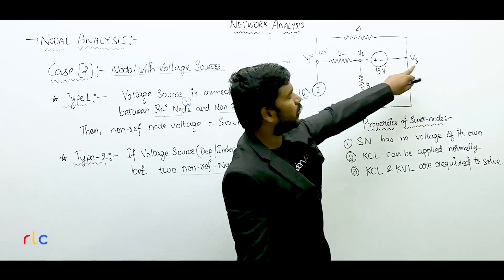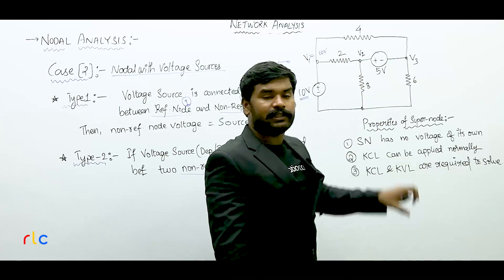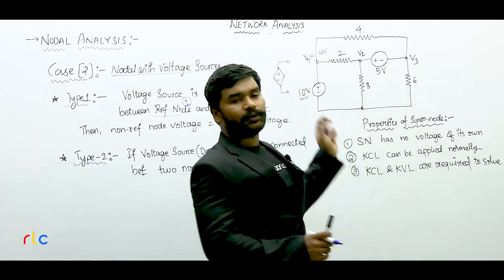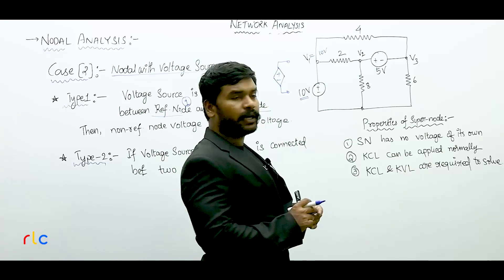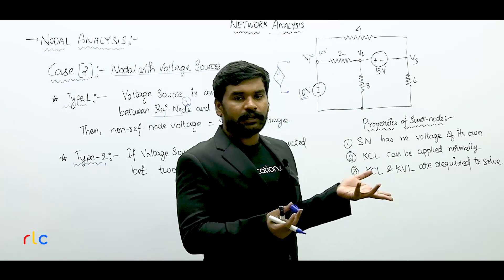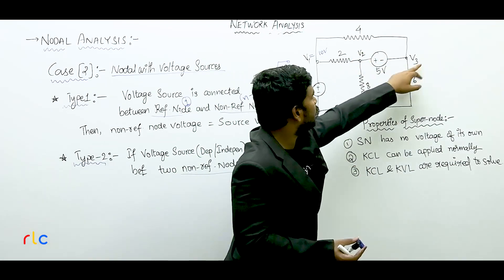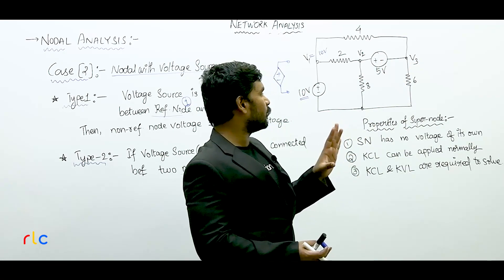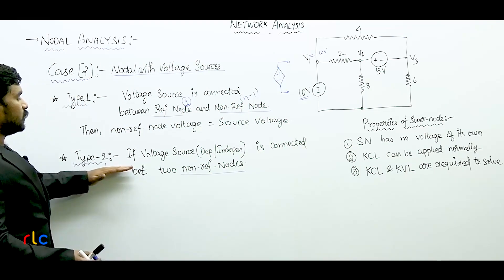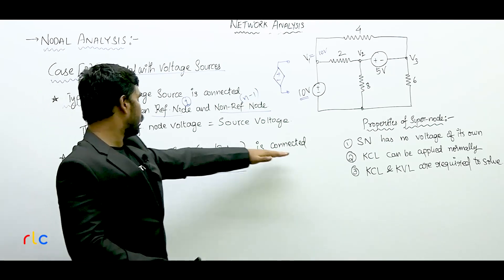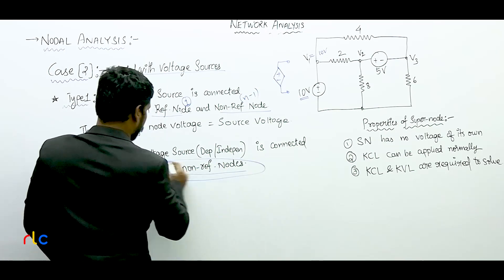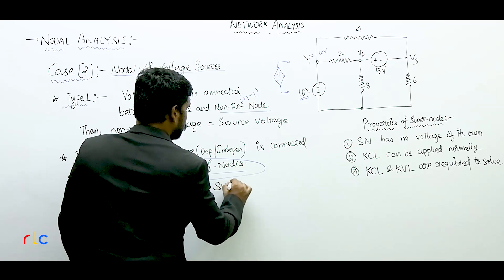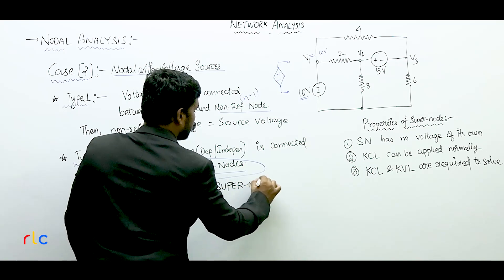For example, here we have node number 2 and 3. There is a voltage source connected between them. The current through it cannot be assessed easily. V2 and V3 — for example, it's 5 volts, plus 5 volts and minus 5 volts. When a voltage source is connected between two non-reference nodes, this forms a super node.